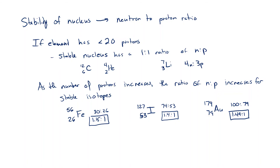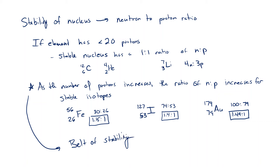We refer to this as the belt of stability. This general rule leads to the belt of stability, which is where most of the stable isotopes of elements exist.